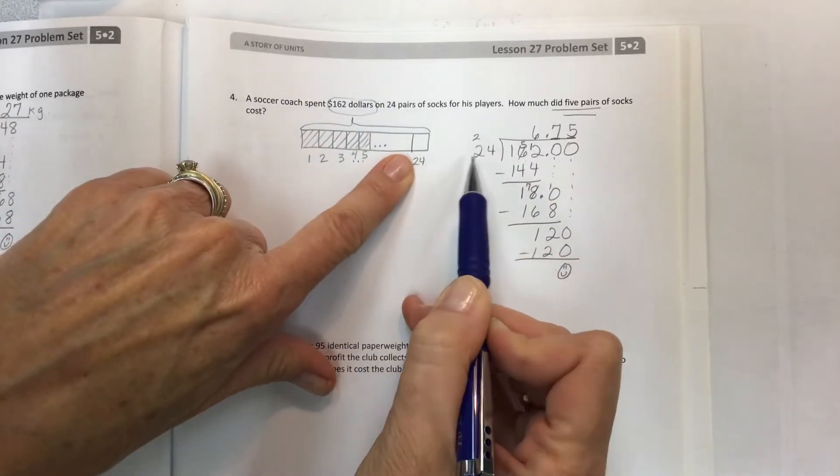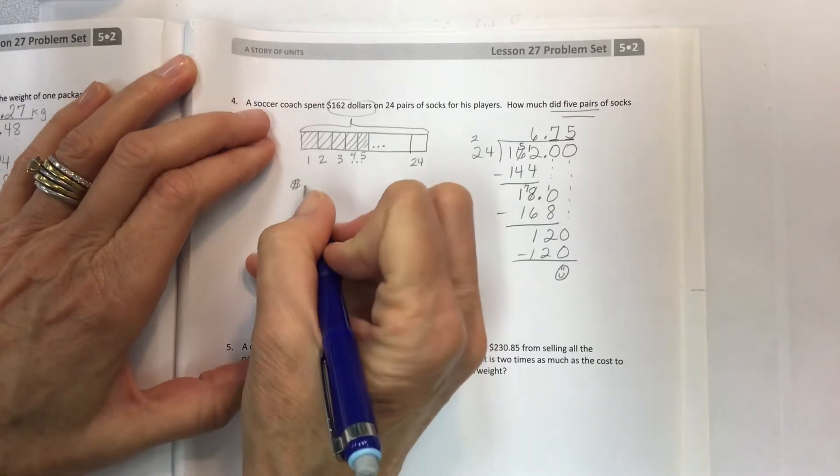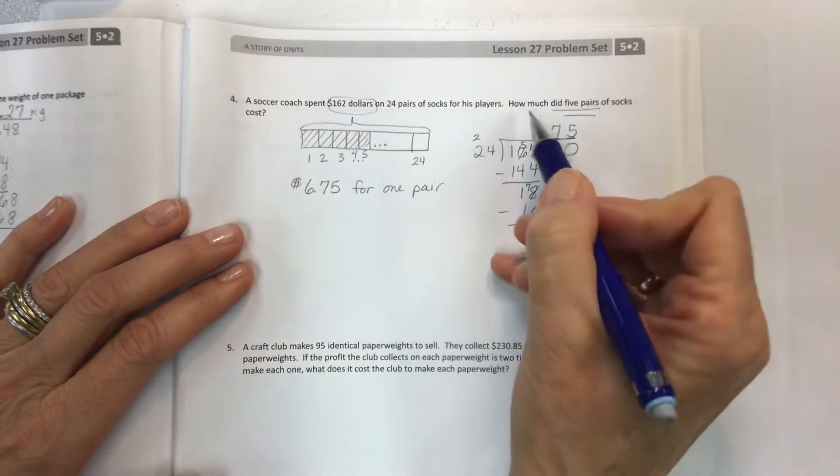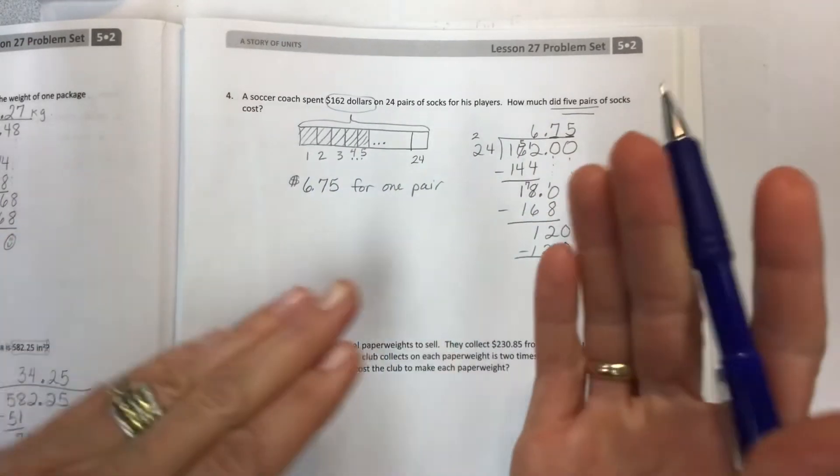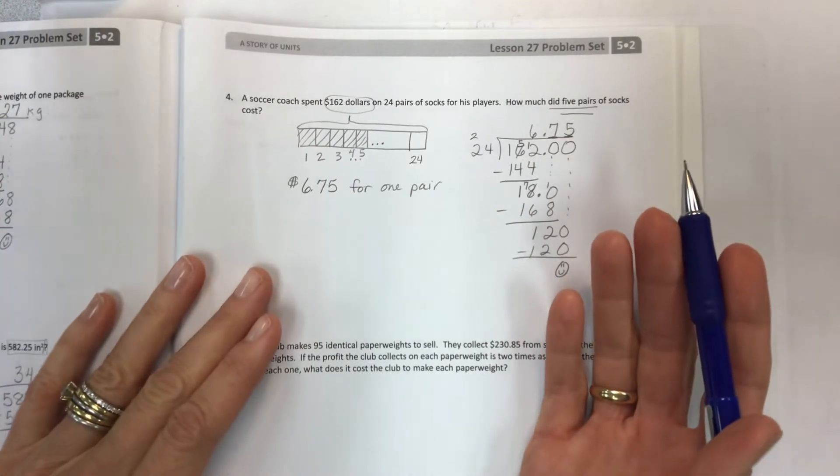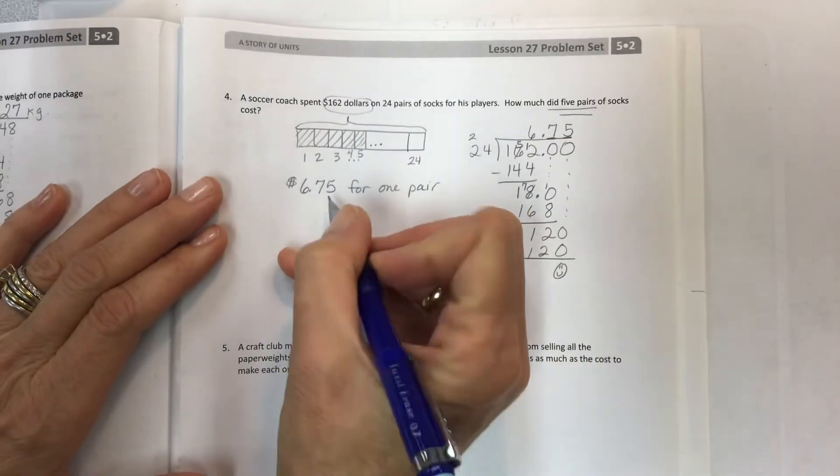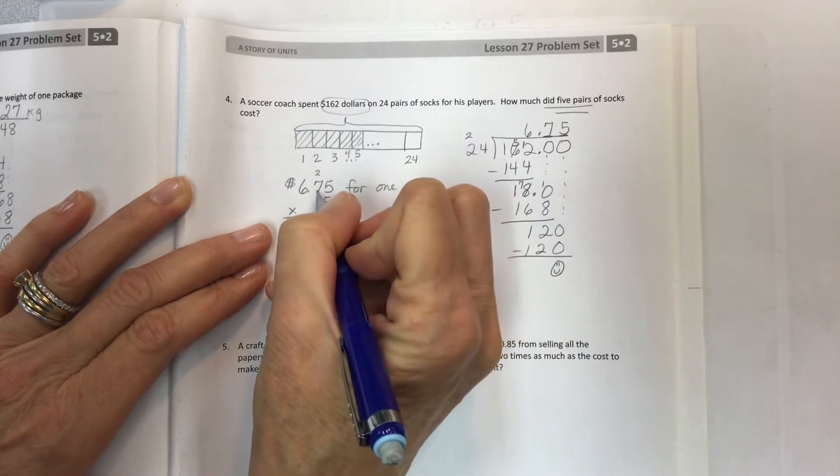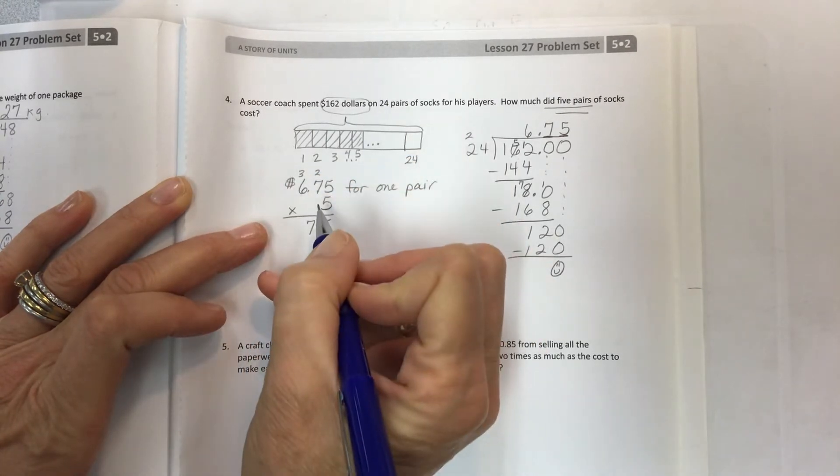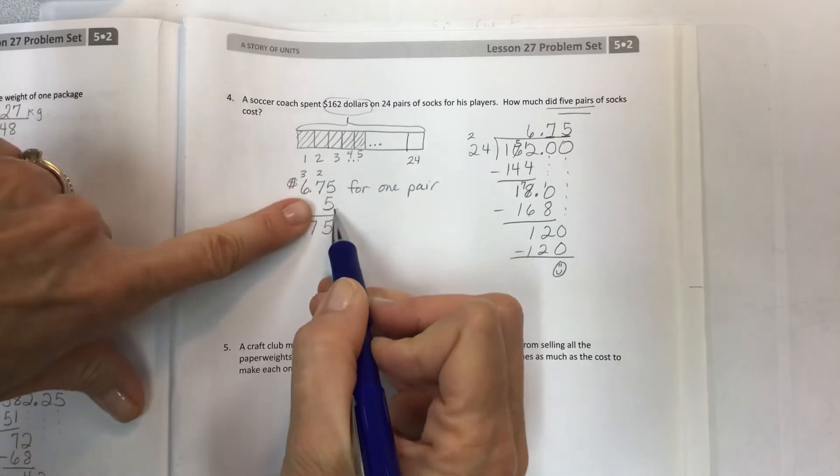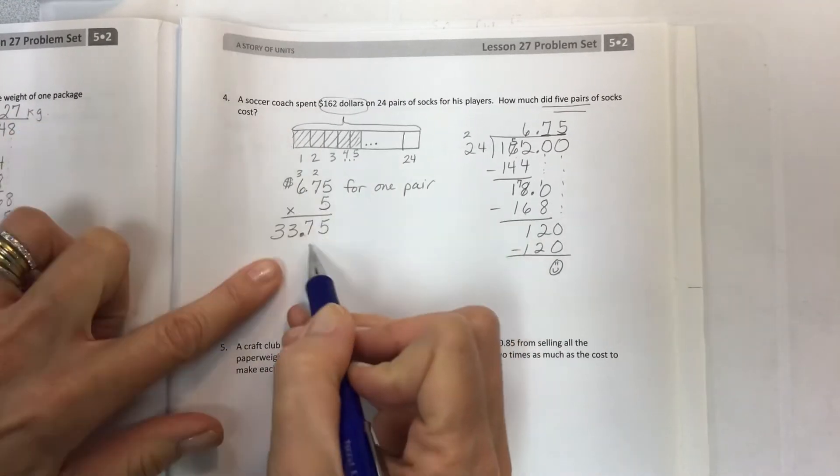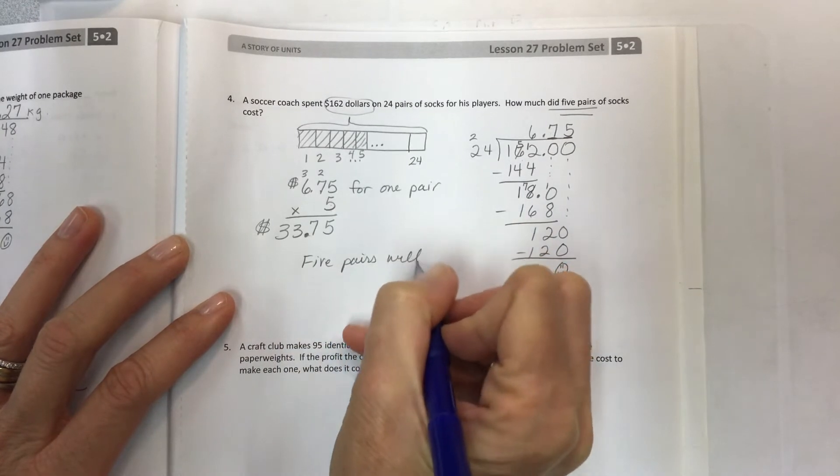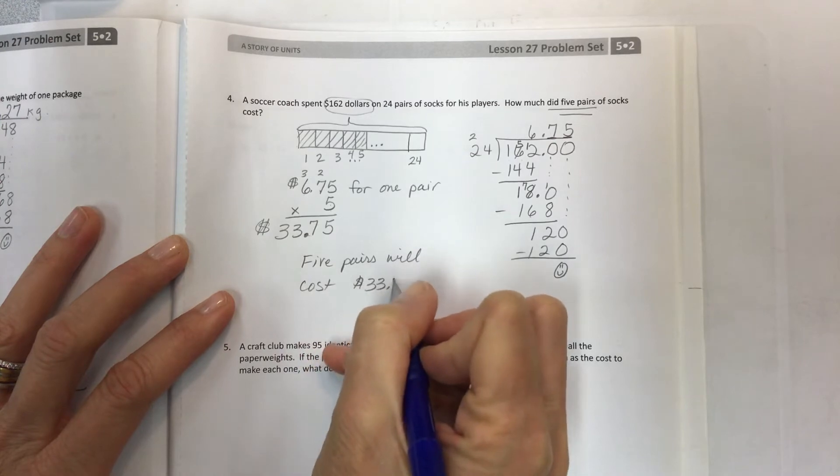But that doesn't answer the question because the question says how much did five pairs cost? Now we're taking our long division skill and combining it with multiplication. Now I need five of these. Five times five is 25, five times seven is 35, 36, 37, and then five times six is 30 plus three is 33. So five pairs will cost $33.75.